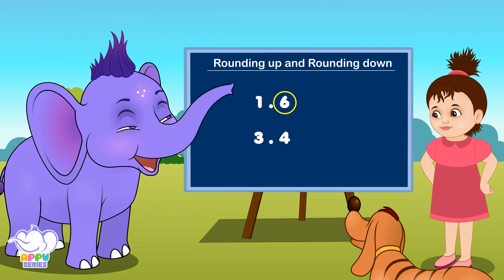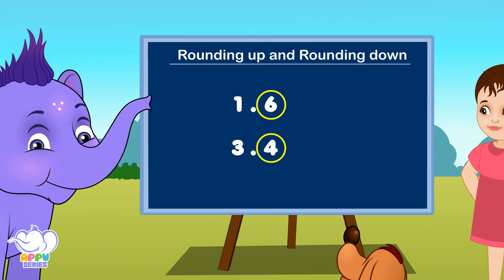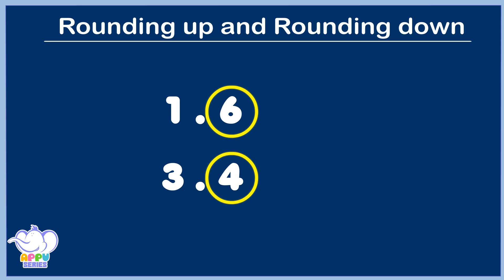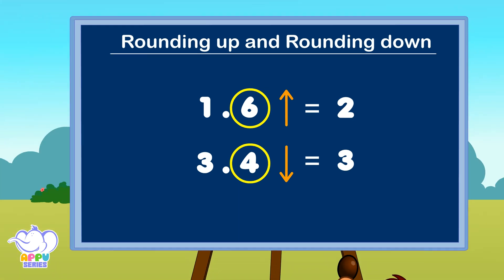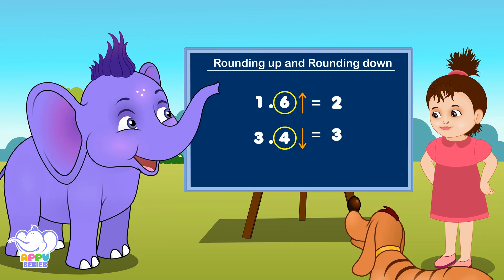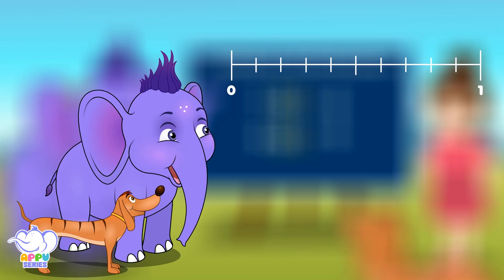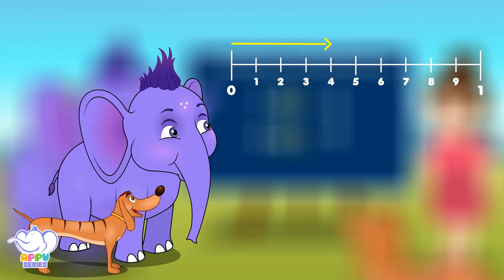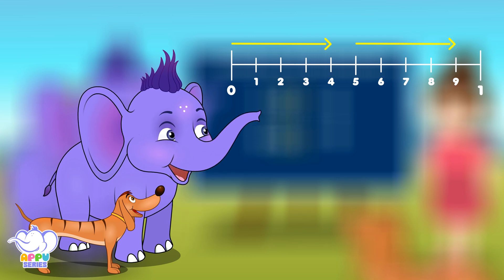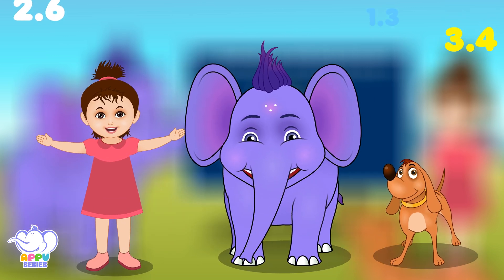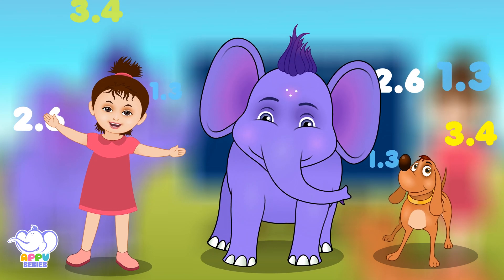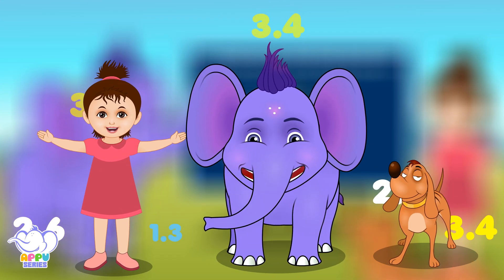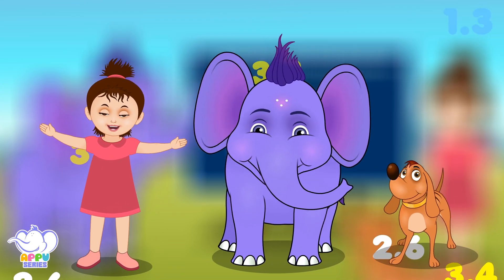Rounding up and rounding down, there's a rounder number to be found. Make it more or make it less, it's a rule that works the best. Where they fall within, keep in mind: 0 to 4 or 5 to 9. It's the basic of rounding off. It's easy to learn, it's not that tough.